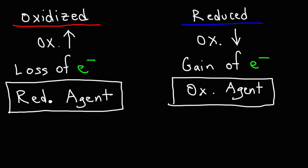There are two simple ways to determine which substance is oxidized. The substance that is oxidized loses electrons and its oxidation state goes up. The substance that is reduced gains electrons and the oxidation state goes down.